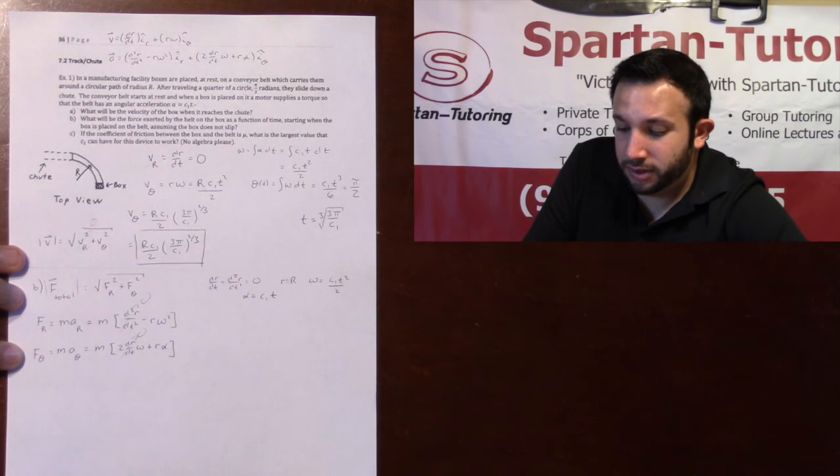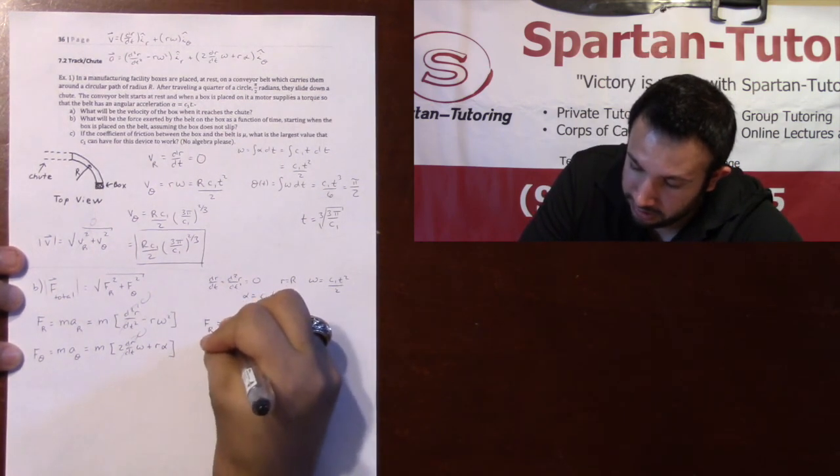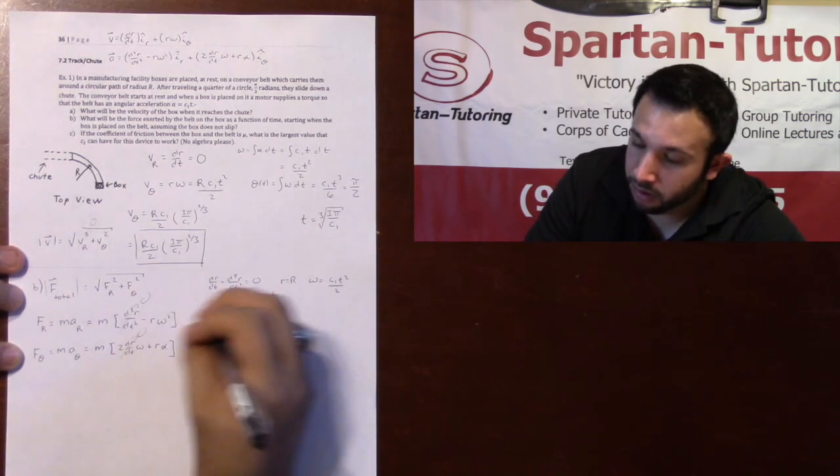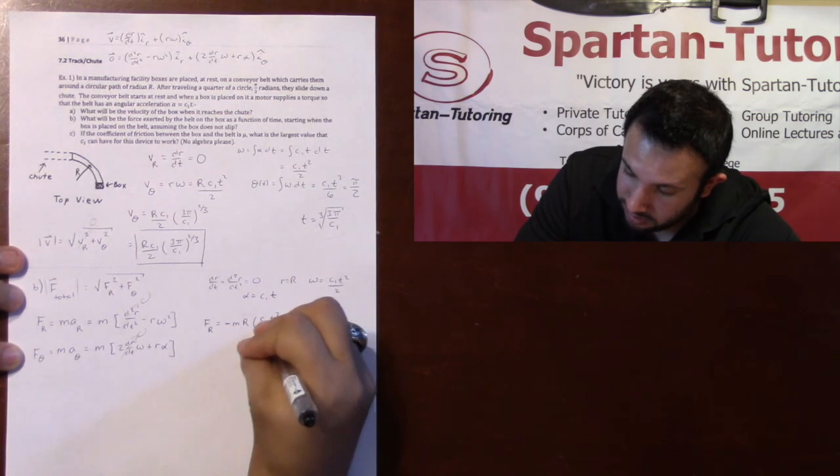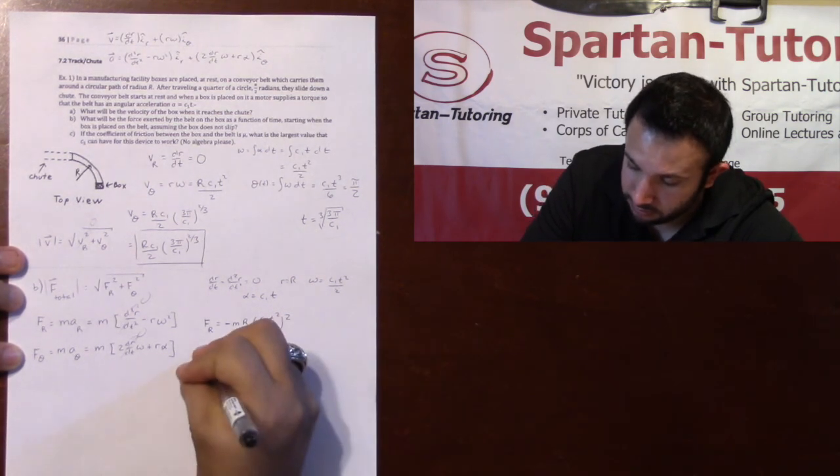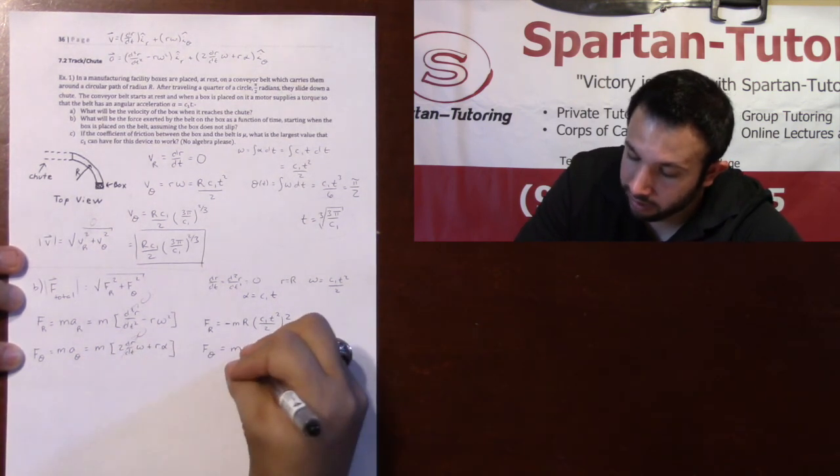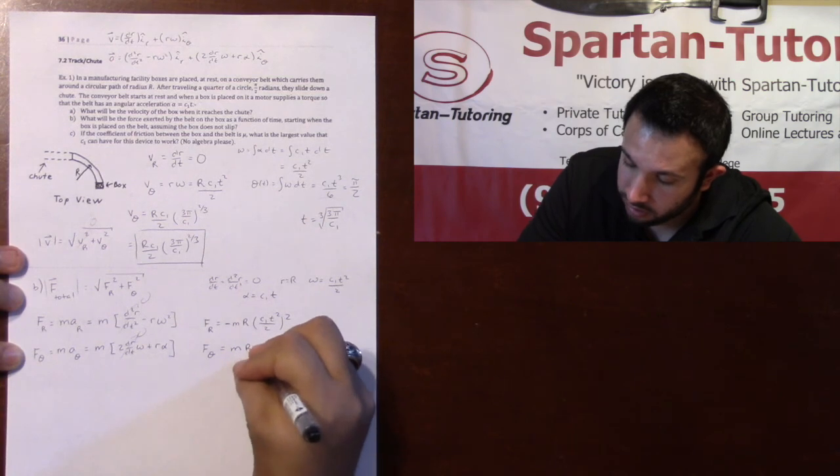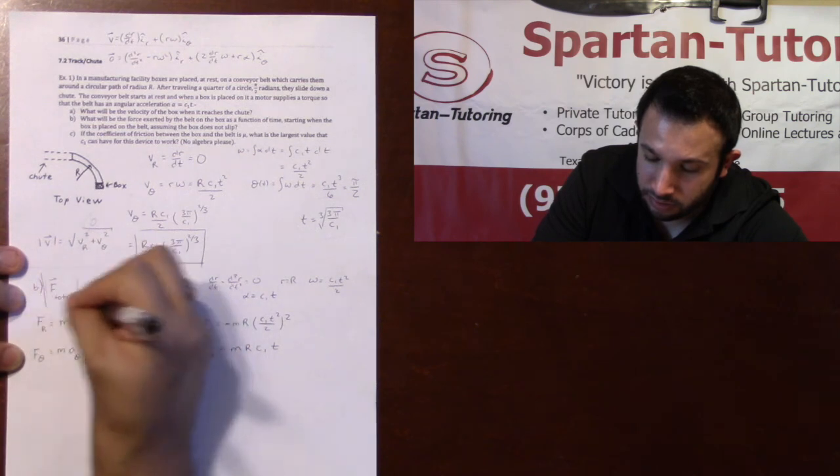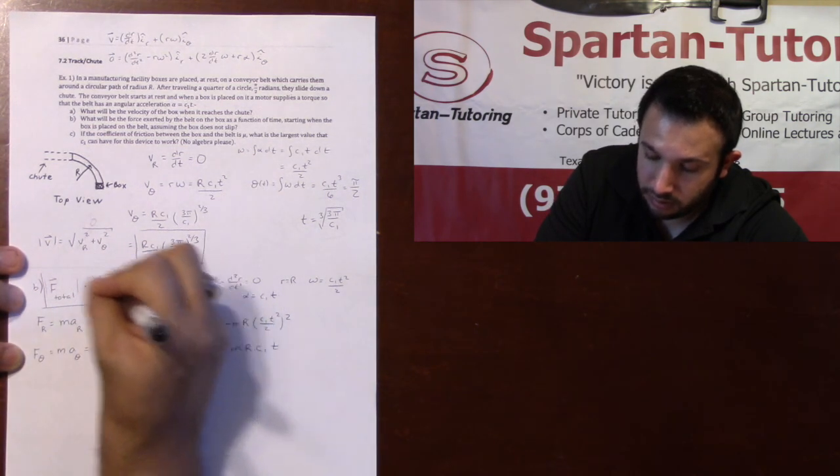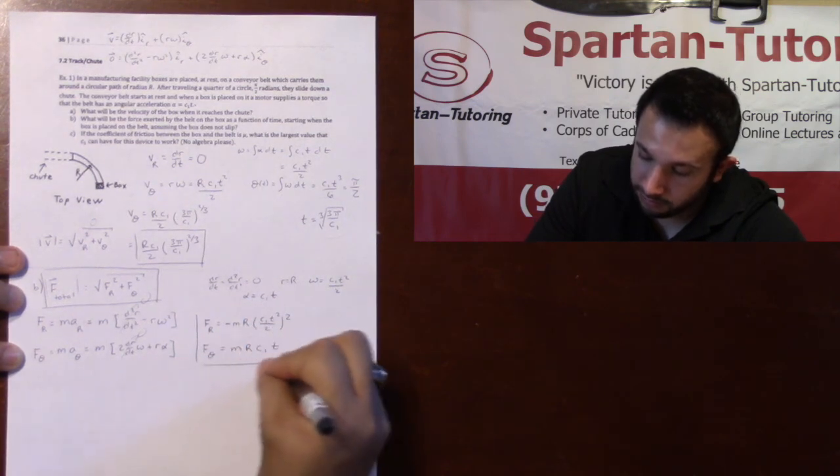Now just plug everything in. What we get is that fr equals negative m capital R omega squared, which is c1t squared over 2 squared. Fθ equals m times r alpha, which is r times c1t. The magnitude of your total force is the square root of fr squared plus fθ squared.